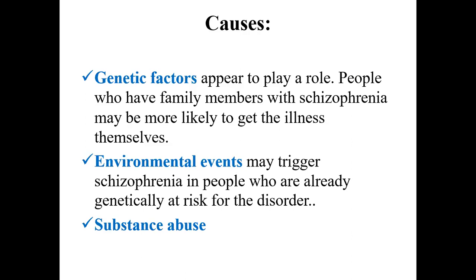Evidence that the disorder is partially inherited comes from studies of twins. Identical twins share the same genes. In identical twins, if one twin develops Schizophrenia, the other twin has a 1 in 2 chance of developing it — that means a 50% chance.